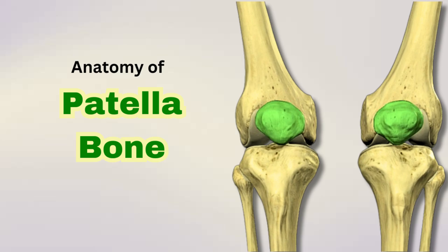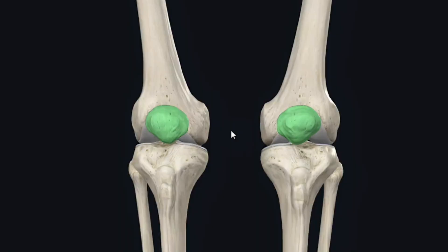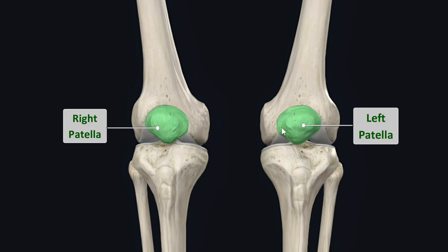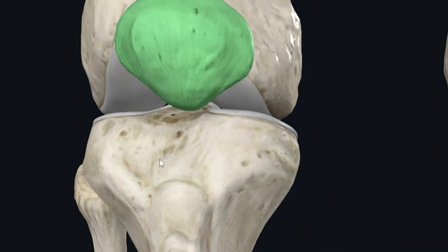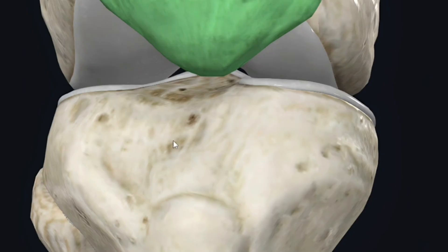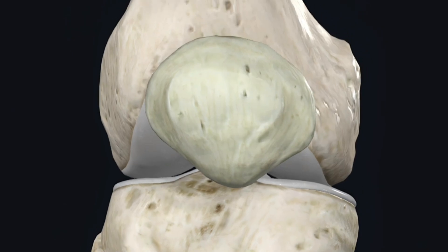Hello everyone, welcome back. In our previous tutorials we discussed the anatomy of hip bone and femur. We will continue our discussion of the osteology of the lower limb, moving on to the anatomy of the patella bone. There are two patella bones in the body — this one is the right, while this one is the left patella bone. We will zoom in on the right patella bone to discuss all the important anatomical features.